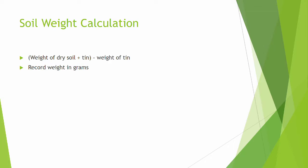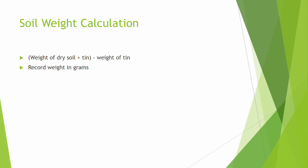In order to calculate the dry weight of the soil, take the weight of the tin filled with dry soil and subtract the empty weight of the tin. Record the soil weight in grams.